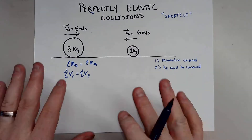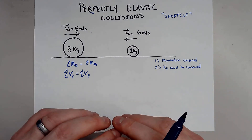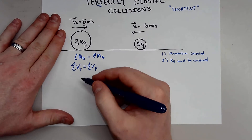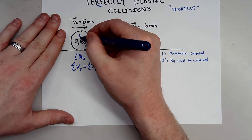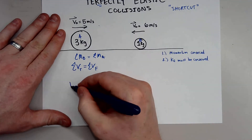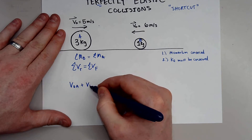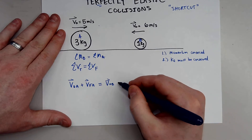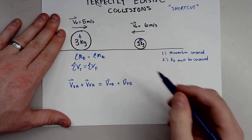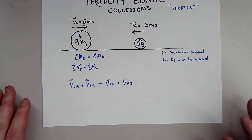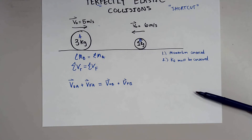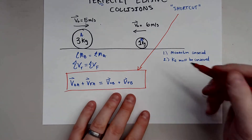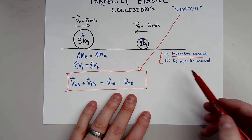The overall mass and the overall velocity of this problem are not going to change — it's just going to be transferred differently. With that being said, if we call the two objects A and B, the velocity initial of A plus the velocity final of A is equal to the velocity initial of B plus the velocity final of B. So the total velocities have to be equal.